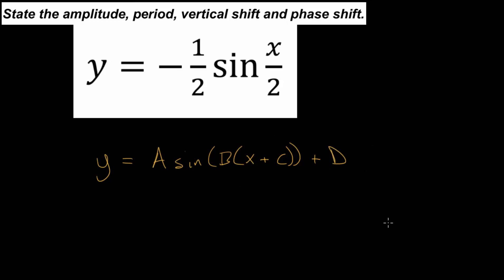And then closing off the input, we have plus d on the outside. Now, relating it to these four concepts, the amplitude is related to this coefficient on the sine function, and actually the absolute value of this is equal to the amplitude. So the absolute value of a is the amplitude.